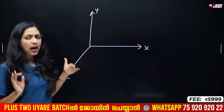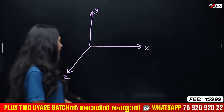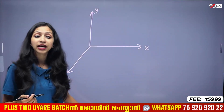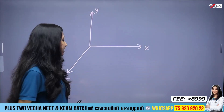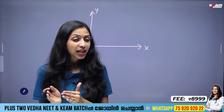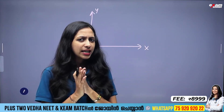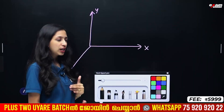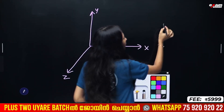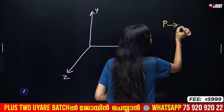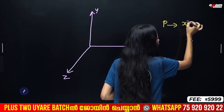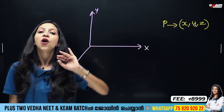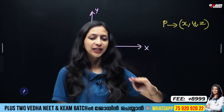What does a point in space look like? A point P in space has coordinates — an x coordinate, a y coordinate, and a z coordinate. So instead of an ordered pair, we have an ordered triple (x, y, z) to represent a point in space.